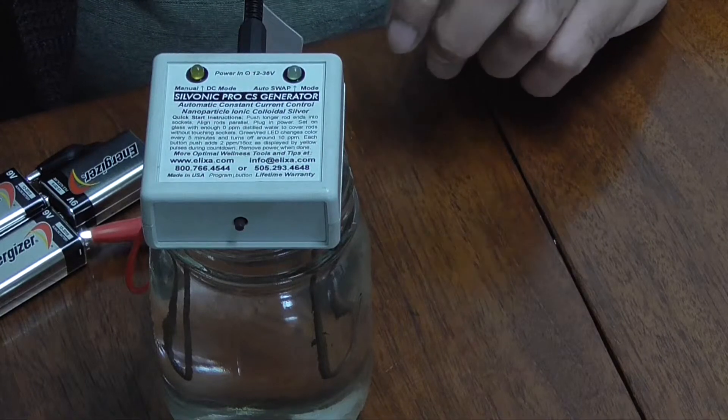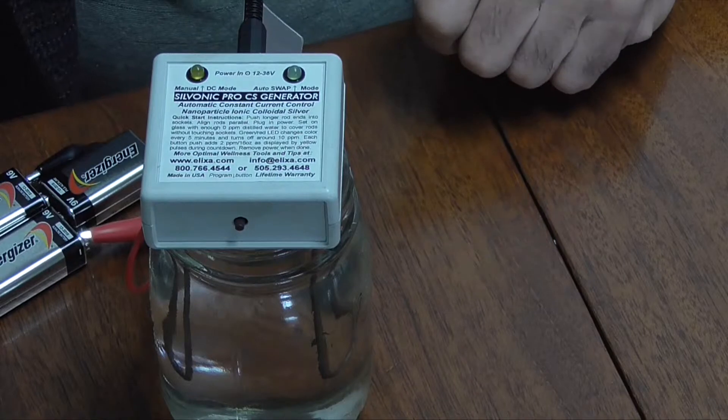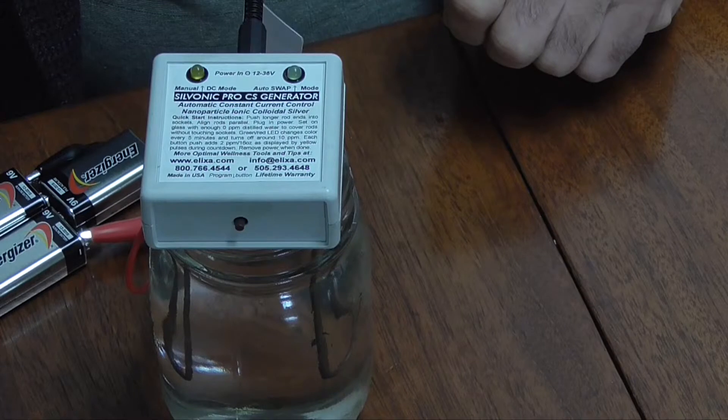So for each time I've pressed the button, it'll add 30 minutes to the process, or approximately two parts per million, for every pint, every 16 ounces.